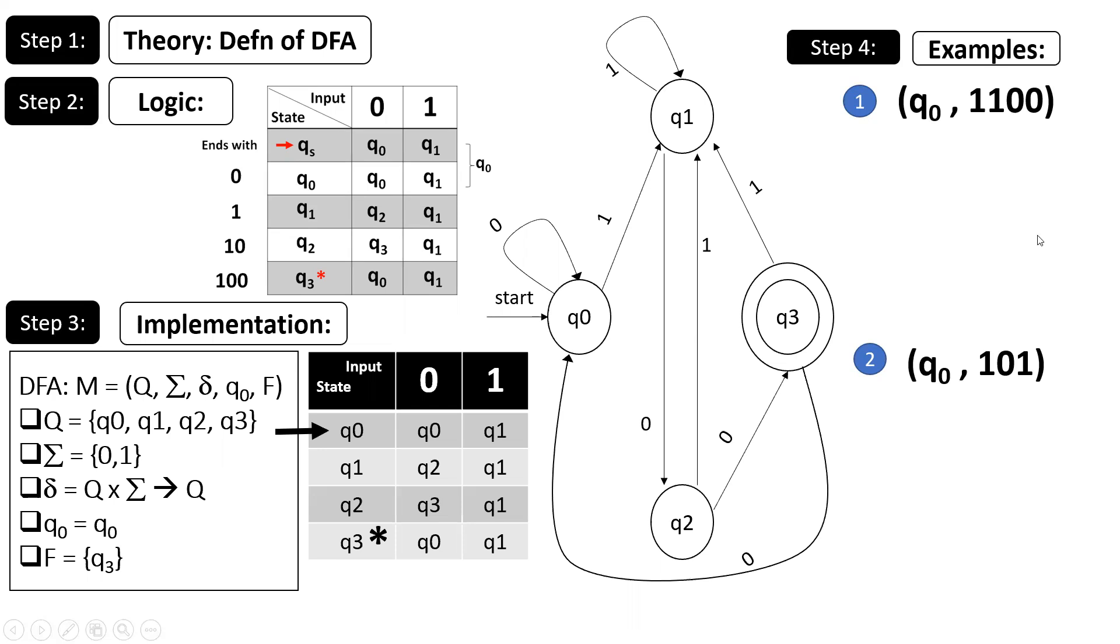2 examples liye hai. Phele mein yaw input is ending in 1 0 0 jabke second me it is not ending with 1 0 0. We start from q0 the start state. So q0 on 1 is q1. So you make a transition to q1. This is a transition symbol. Q1 on 1 is q1, q1 on 0 is q2, and q2 on 0 is q3. And because q3 is final, I must accept.